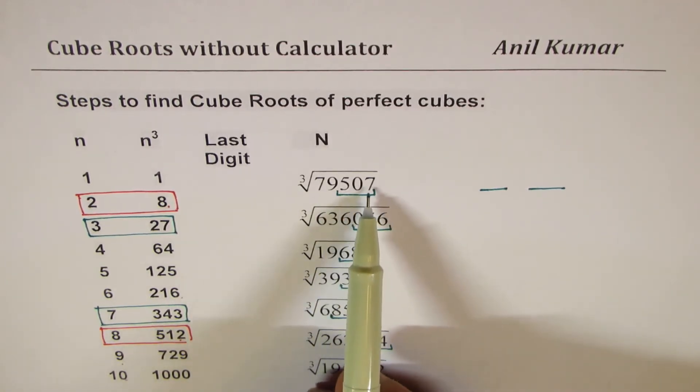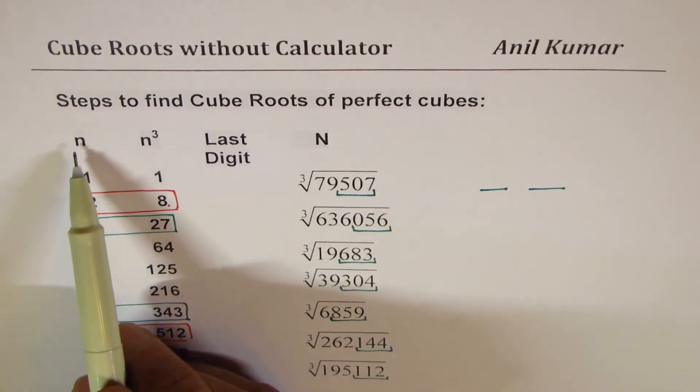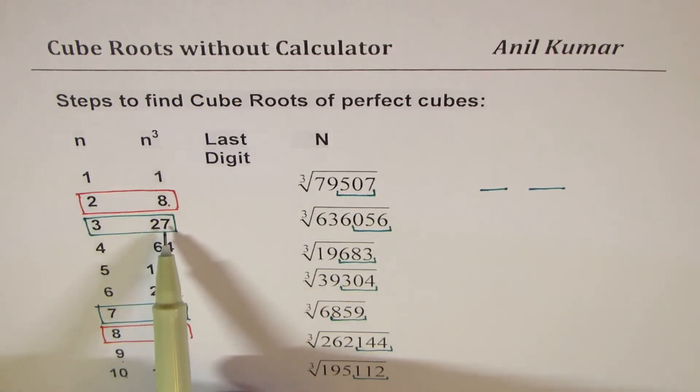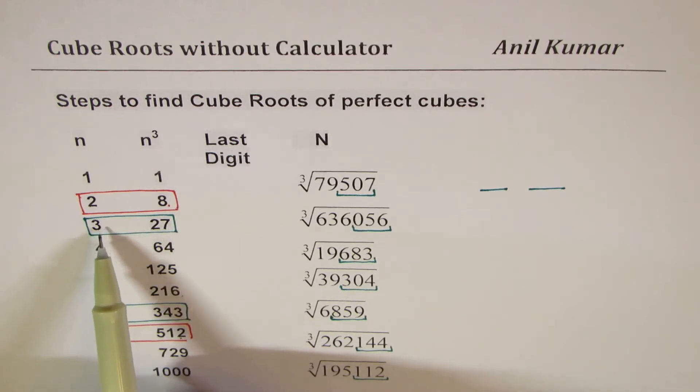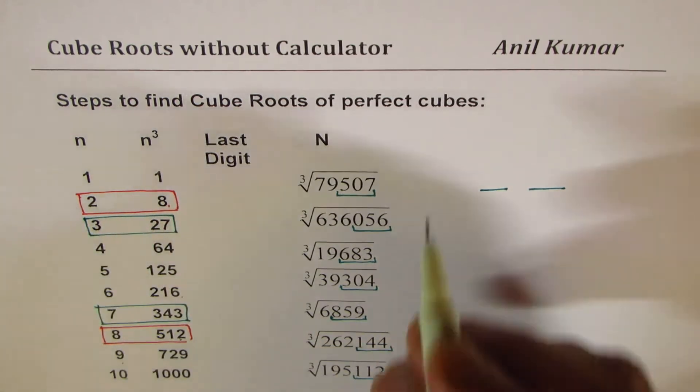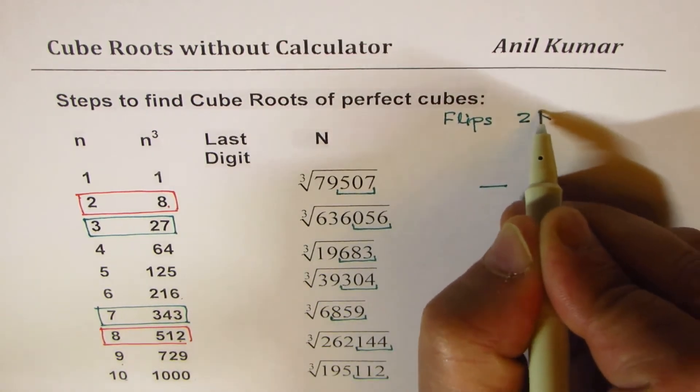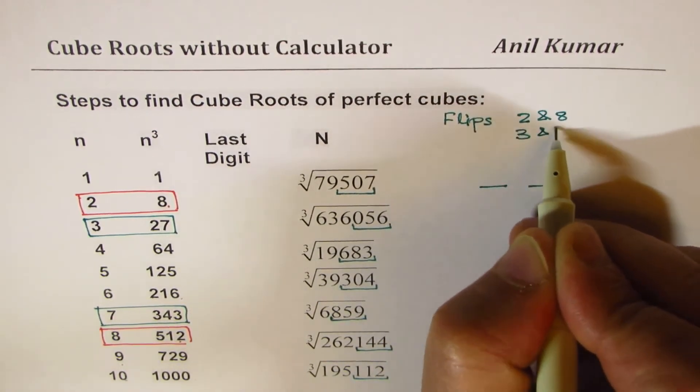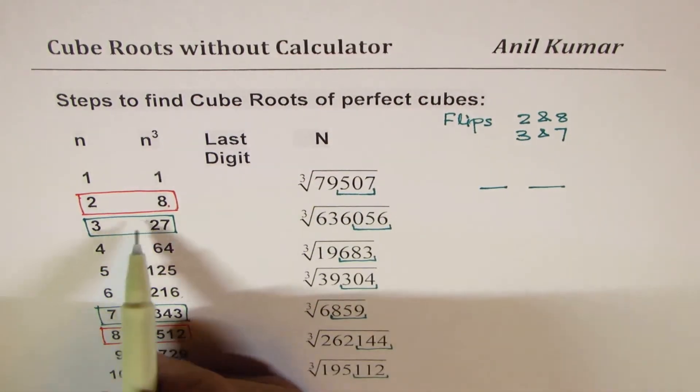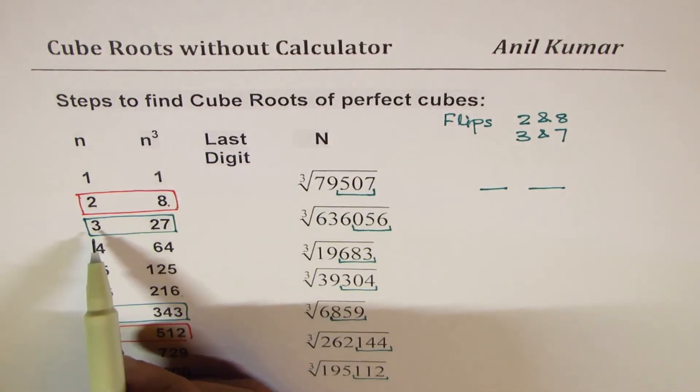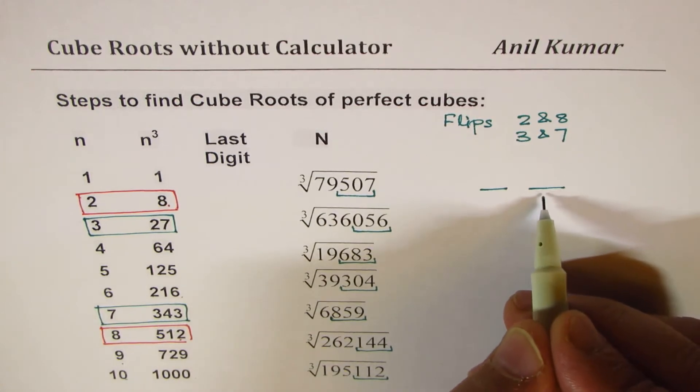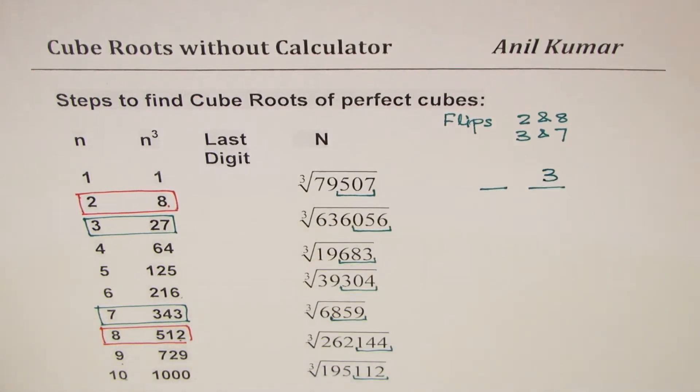So what is the value of n for which last digit is 7? We know the rule: for 3 and 7 it flips, 2 and 8 it flips. So we can write down here flips: for 2 and 8, and 3 and 7. So 7, we know the last digit 7 is for 3. So in ones place we get 3 as our result.